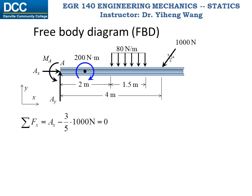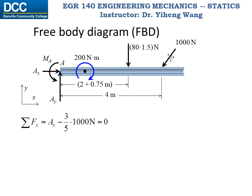The next equation is for the resultant force along the y-direction. Before writing it, I need to replace the distributed load with a concentrated force. Since this is a uniform distribution with a load intensity of 80 N/m over a length of 1.5 m, the resultant force is 80 × 1.5, and its position is at the center of the load. Therefore, the resultant force along the y-axis equals unknown force Ay minus the resultant of the distributed load (80 × 1.5), minus the vertical component of the 1000 N force, and it equals zero.